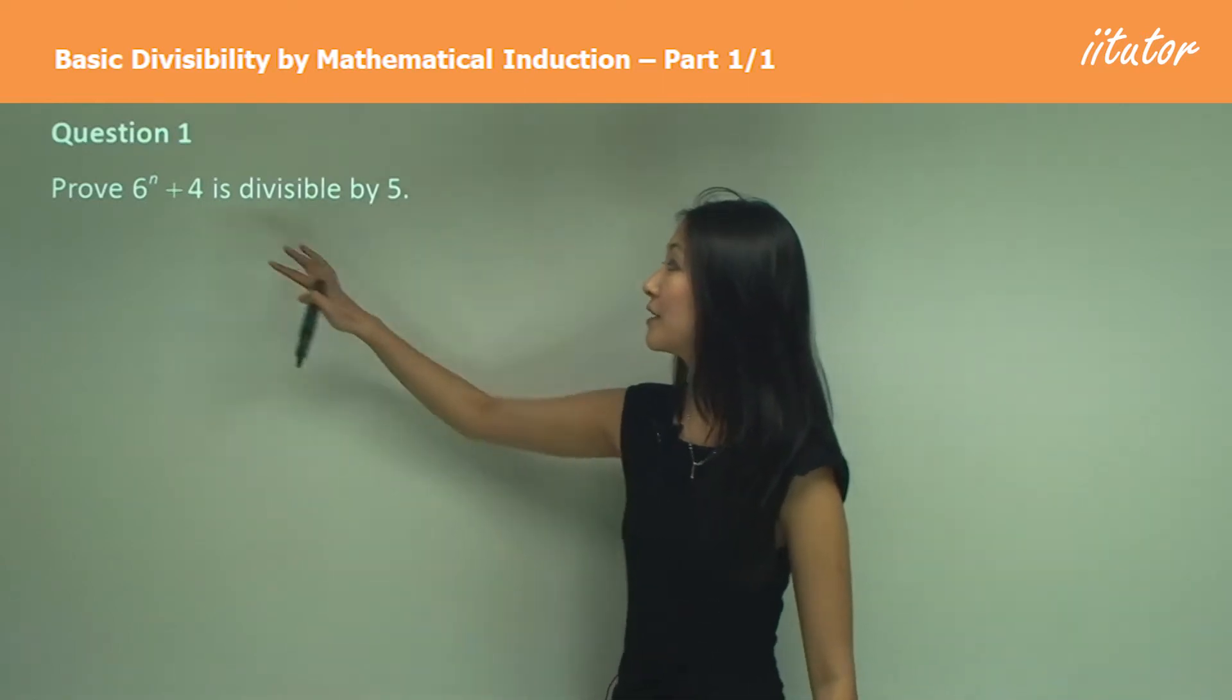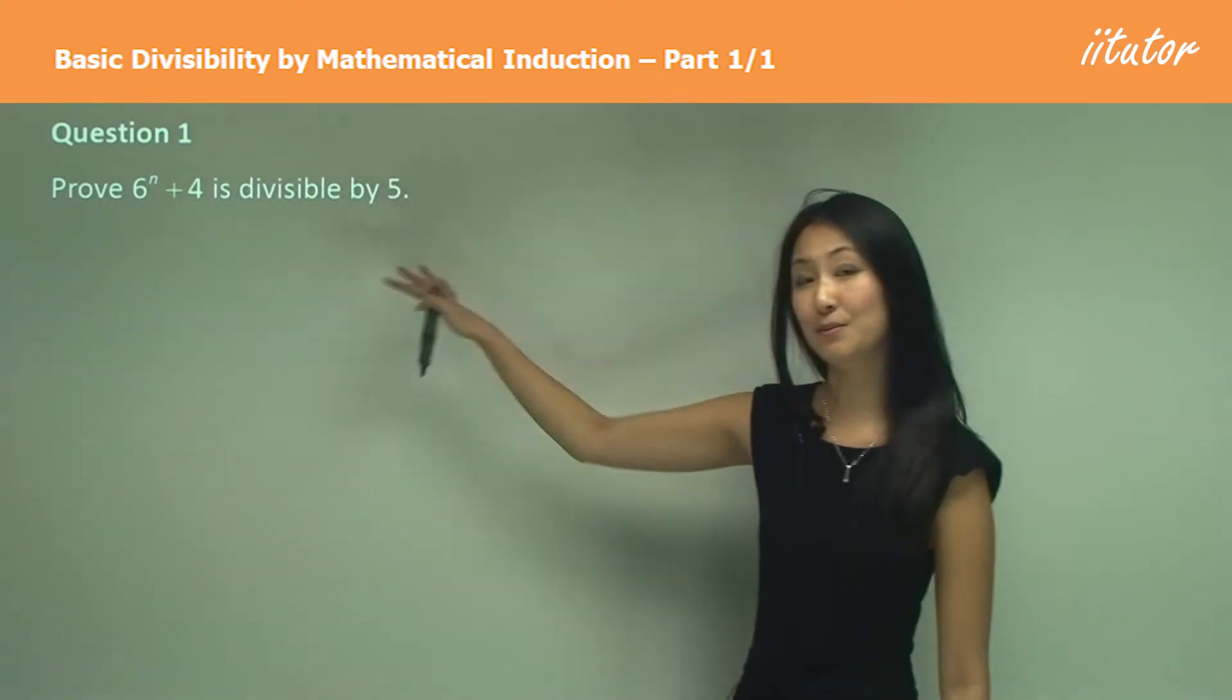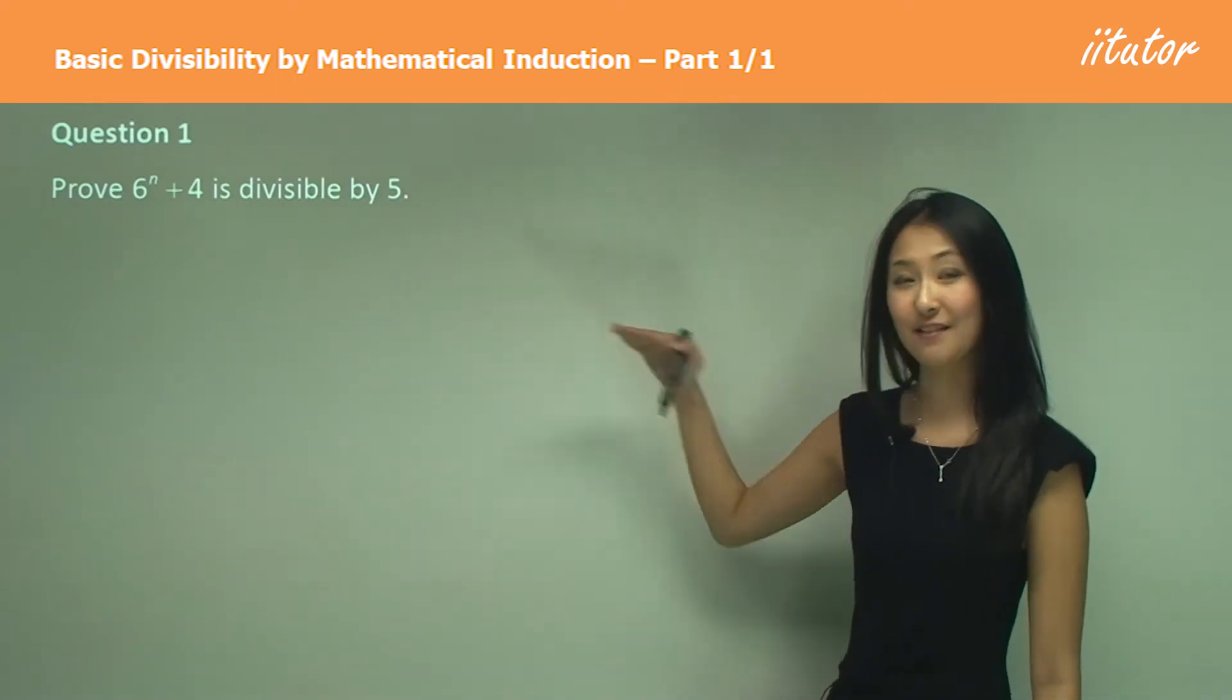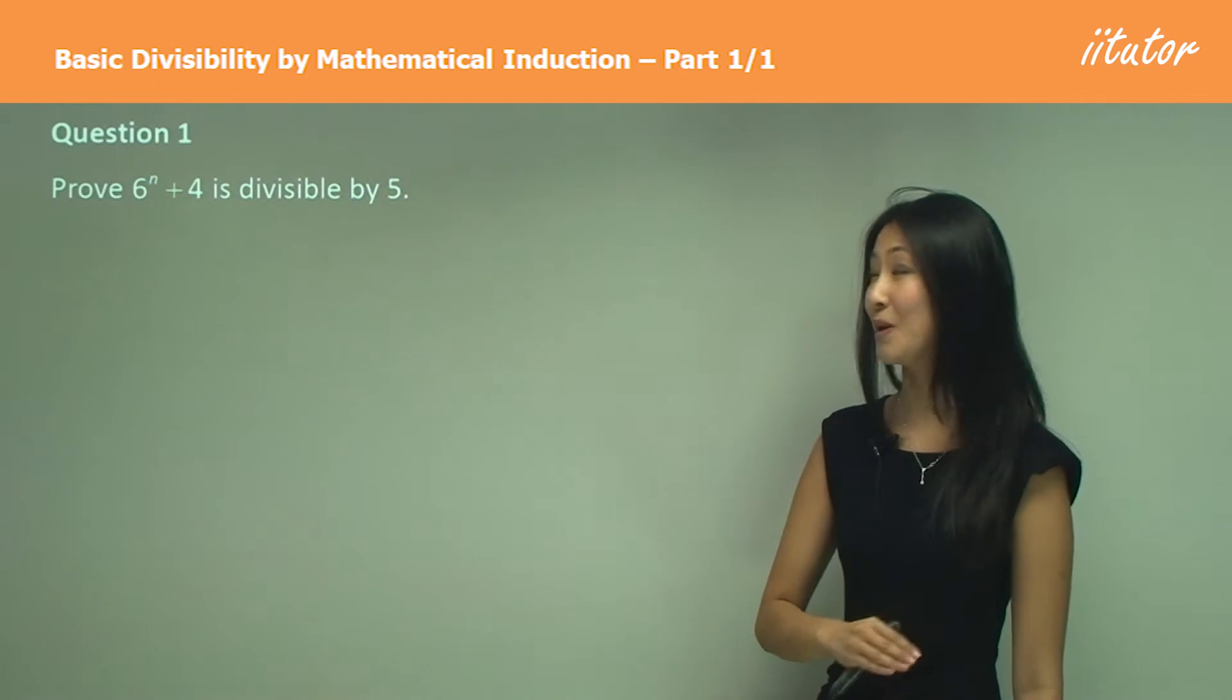So the idea is we want to somehow prove that this is divisible by 5, and we still want to follow the same process of mathematical induction as we did in the previous module.